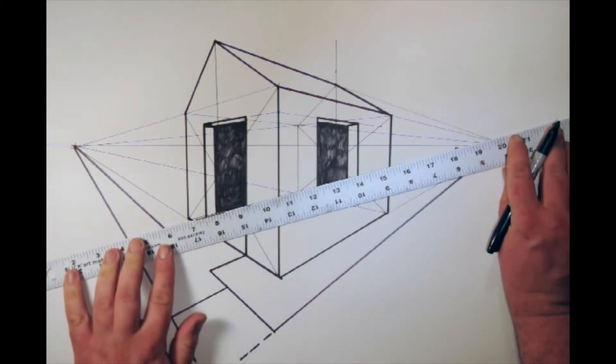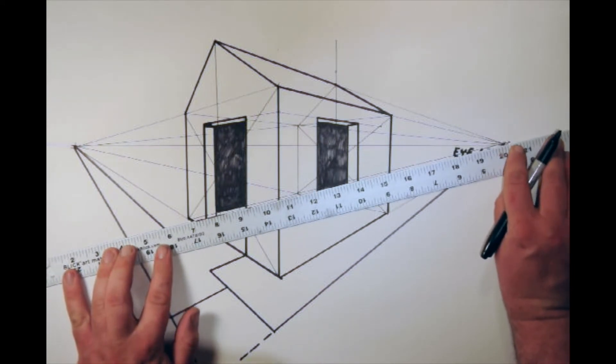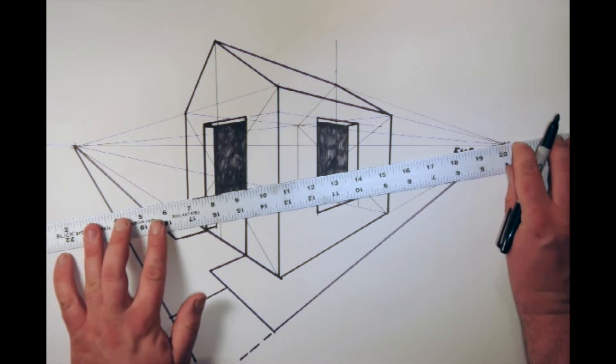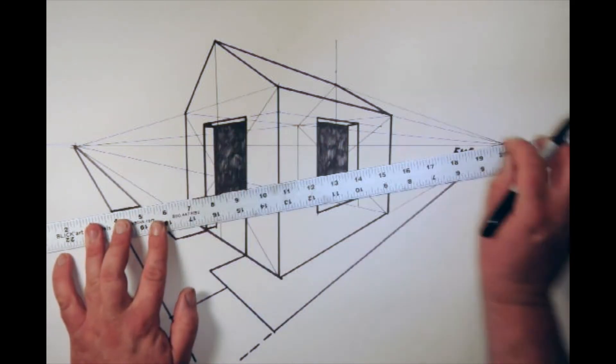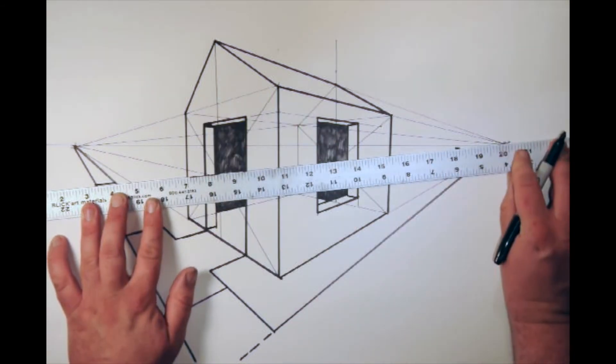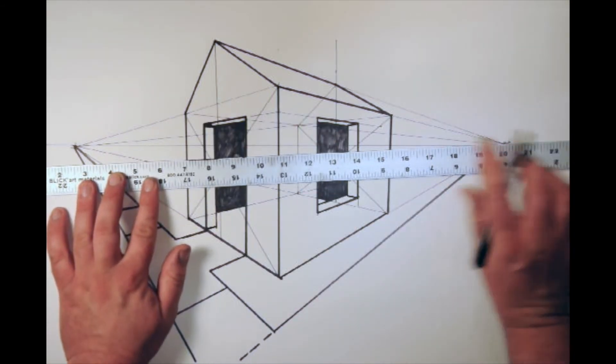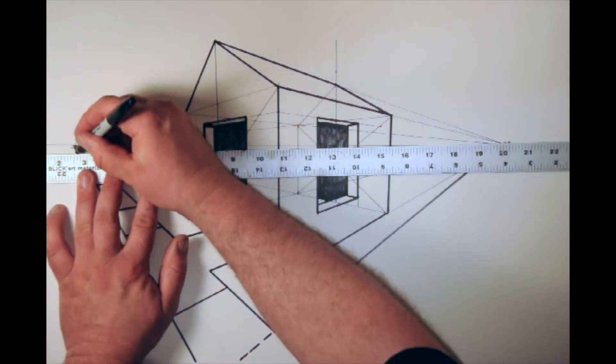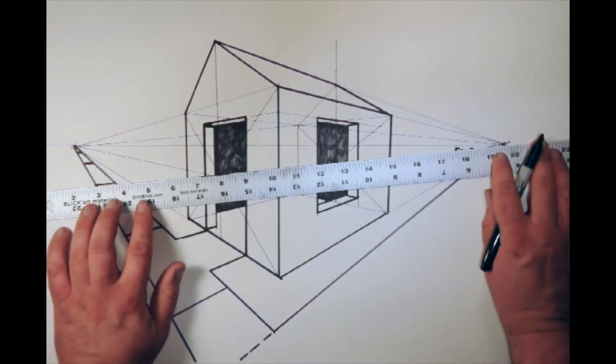These, by the way, are going back to the opposite vanishing point. And as they get further away, they're going to get closer and closer together. And there is a way to figure it out. I'm not going to do that yet, but they call that the law of diminishing size. But I'm just guesstimating right now.